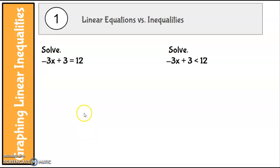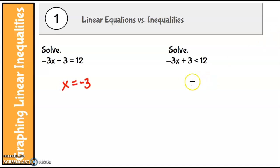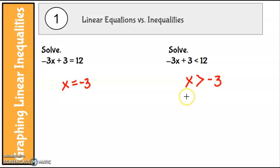What are the differences that you see? This one is an equation and this one is an inequality. This one is going to have one solution, that is x equals negative 3. This one — remember we have to flip the inequality because that's a negative coefficient — has many solutions; anything that is bigger than negative 3 is a solution to this one.